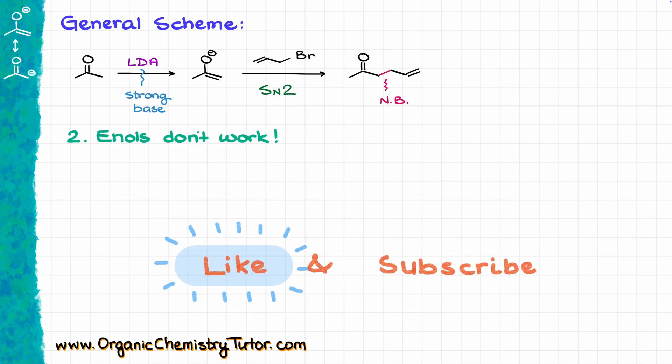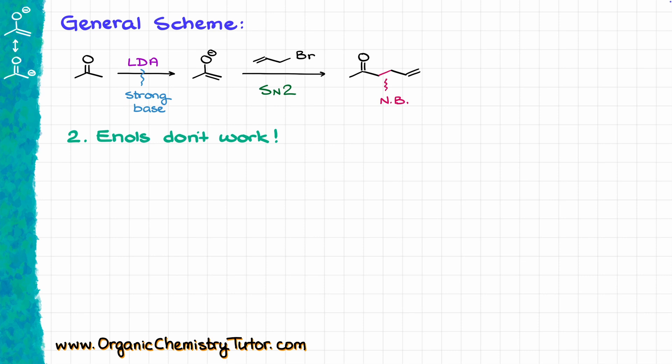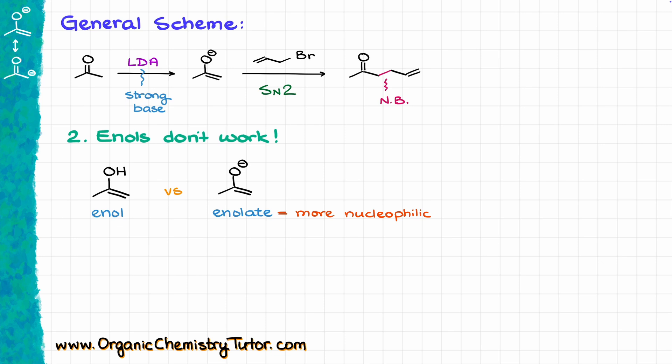Another important point is that enols don't really work in this reaction. The enol is the species with the OH group, while the enolate is the negatively charged version — essentially the conjugate base of the enol. Due to the excess electron density from that negative charge, enolates are significantly more nucleophilic than enols, so within the scope of this reaction enolates work well while enols don't really work at all. There are a couple of rare literature examples, but for our course basically never try to use an enol for this type of reaction.